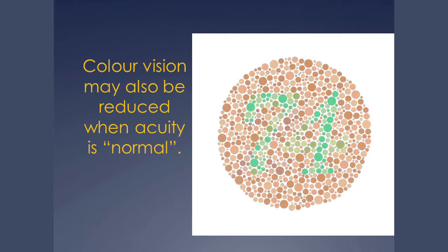Colour vision is another area that can be more affected than expected. In clinical practice we tend to use Ishihara-style charts — you can see the number 74 hidden among the coloured dots. It's normally a test for colour blindness, but for research purposes there are more accurate ways of measuring colour vision.